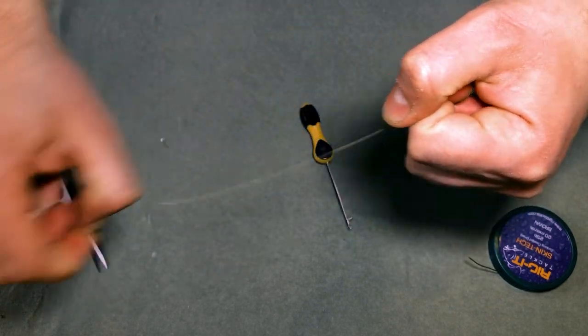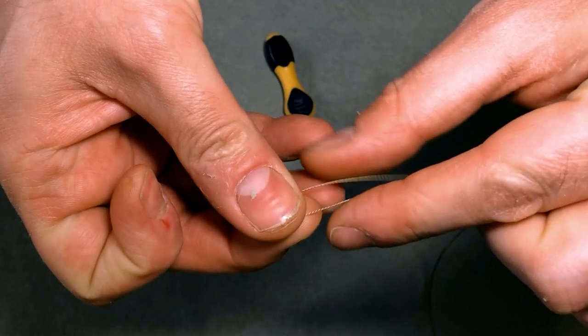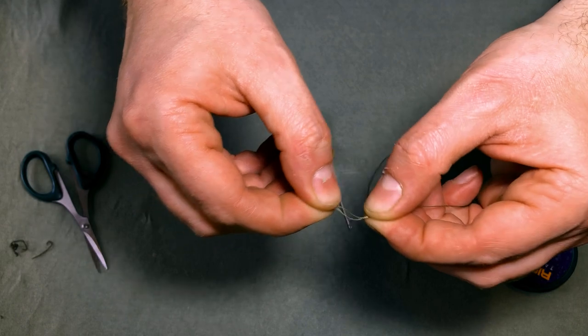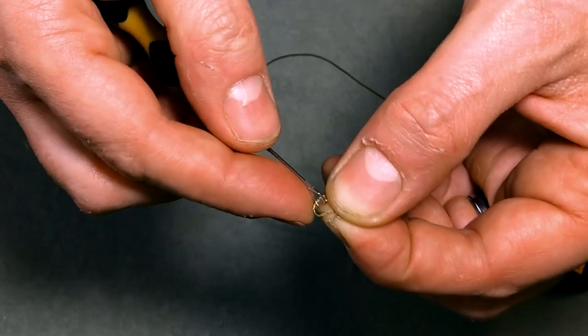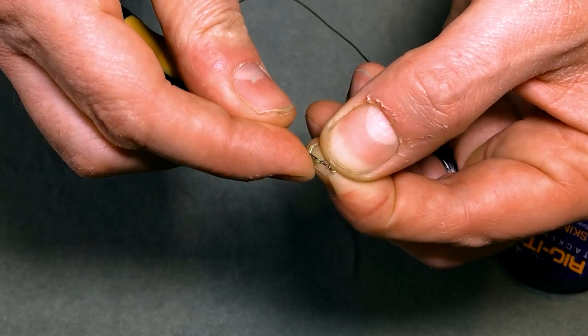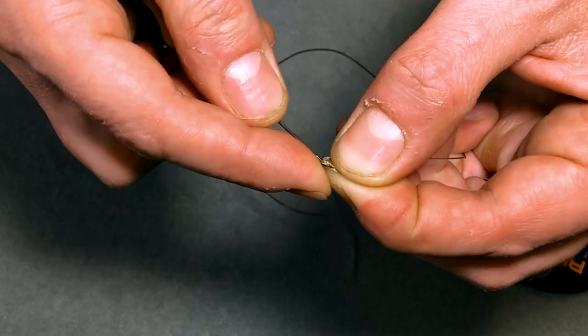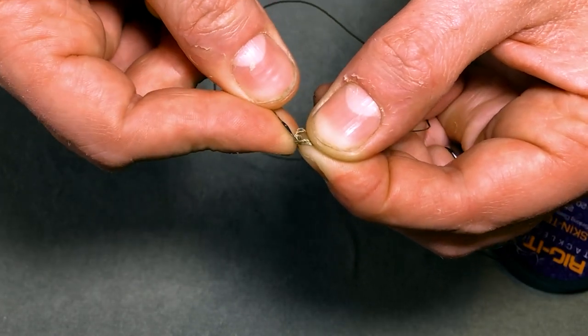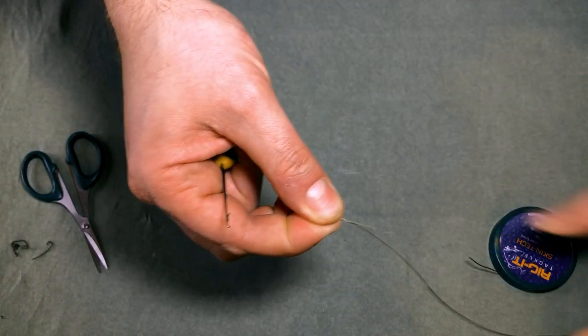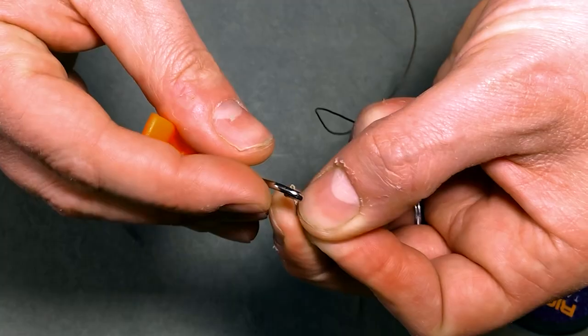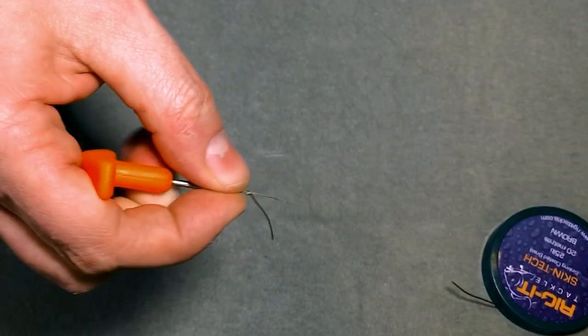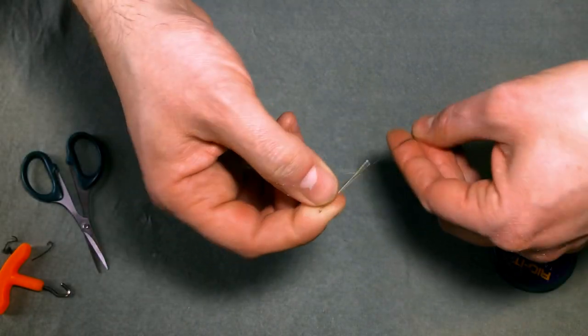But obviously the first part is making your loop for your boilie stop. Now this can be quite fiddly if you haven't got your glasses on like me. What you can do is use your baiting needle to pull the little loop through on the braid. I find that's a really good little tip like that. You can pull this little loop, this little knot a bit tighter so it doesn't come undone. And when you're ready you can just trim off the tag end there.